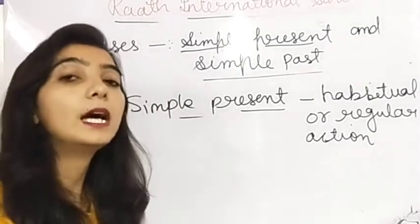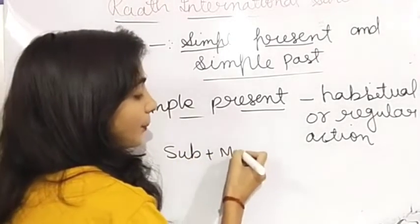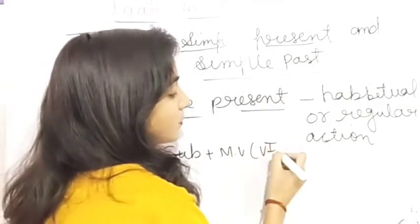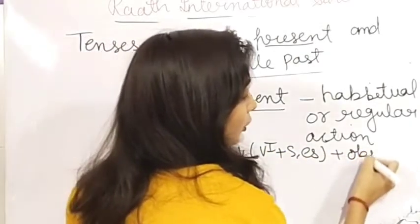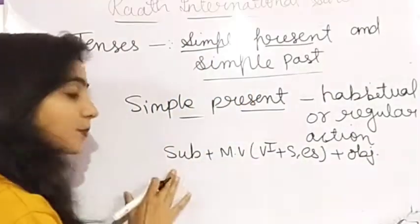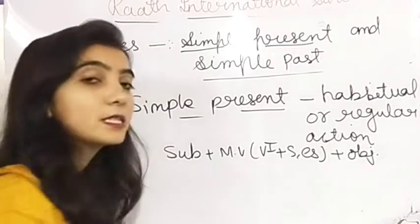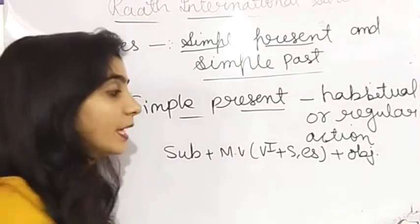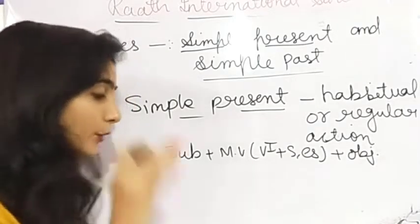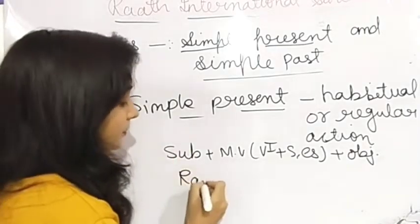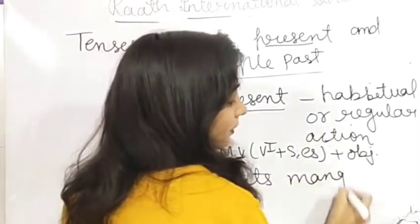What is the sentence arrangement? The sentence arrangement is: Subject + Main Verb (verb first form with S or ES) + Object. Subject can be a noun or a pronoun. The main verb is the action — what we do. The object is what is being done. For example: Ram eats mango.